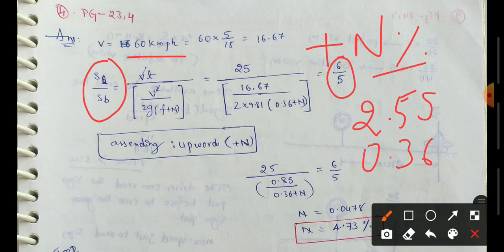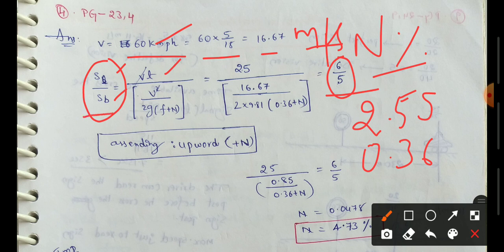We will check the ratio. Lag distance to brake distance is 6 is to 5. The lag distance formula is v multiplied by t. The brake distance formula is v² divided by 2g(f + n), where plus n is the ascending gradient, meaning upward direction.